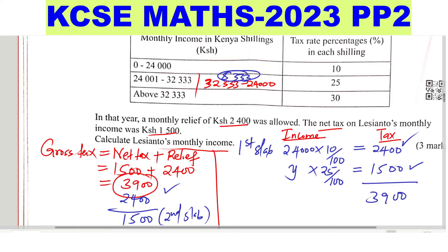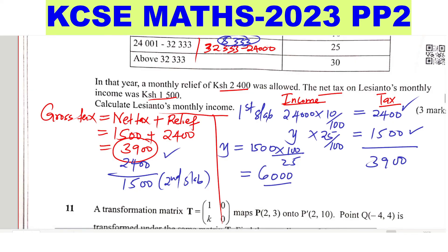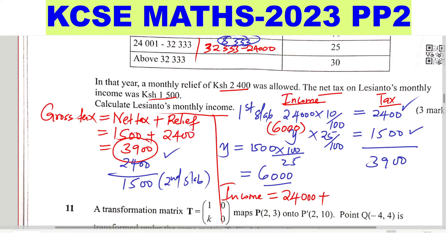So: y times 25% equals 1,500. Making y the subject gives y equals 1,500 times 100/25, which equals 6,000. So 6,000 is the exact income amount in the second slab — when you tax 6,000 at 25% you get 1,500. Therefore, the total monthly income is the income from the first slab (24,000) plus the income from the second slab (6,000), giving a total monthly income of 30,000 shillings.